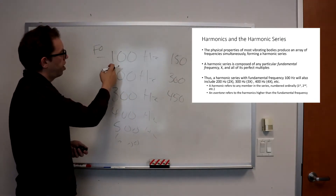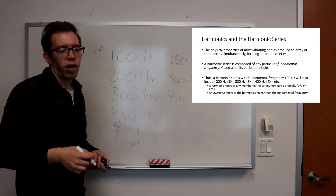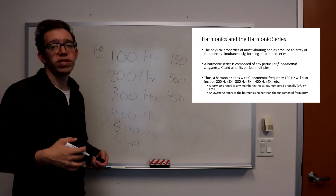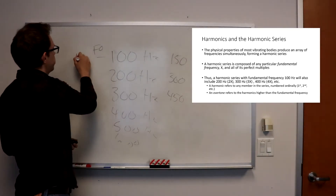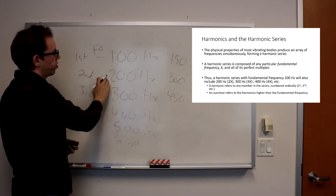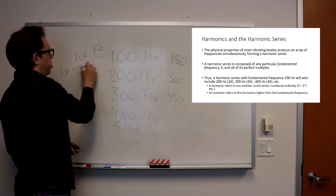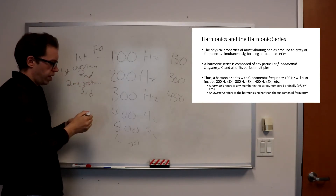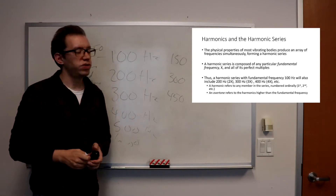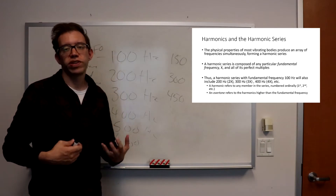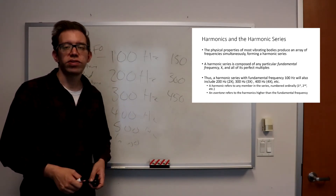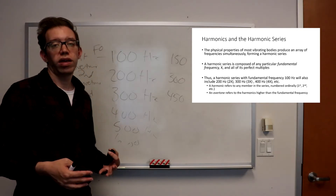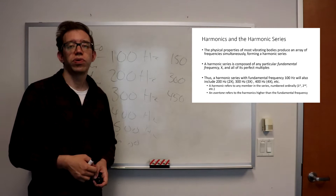The 100 Hz would be the first harmonic, then the second harmonic, third harmonic, fourth harmonic, and so on. We refer to these individual component waves as harmonics — so the 200 hertz here would be the first overtone, the third harmonic would be the second overtone, and so on. That's the terminology we use. The vocal tract produces a harmonic series which is then filtered by the vocal tract in various ways to produce different vowels.